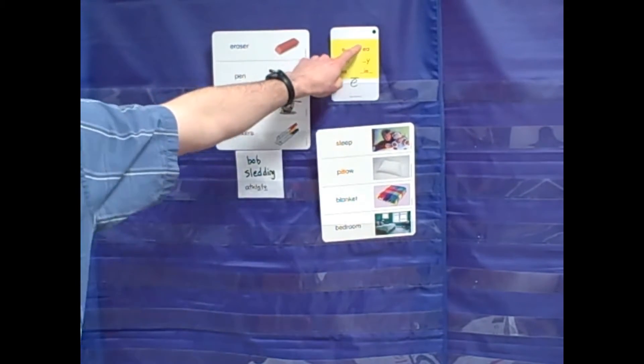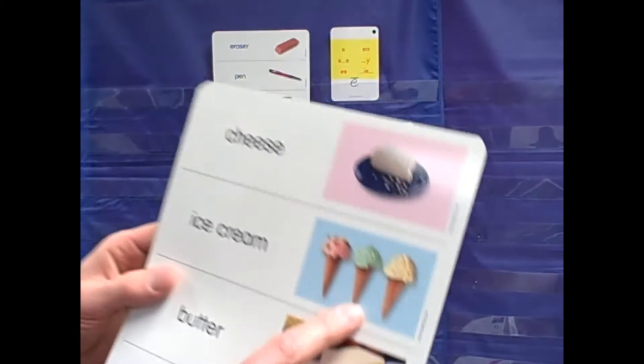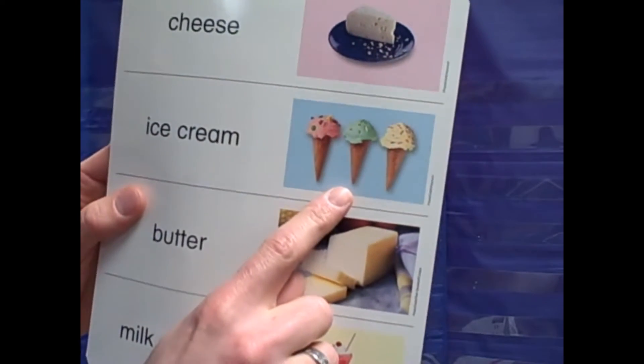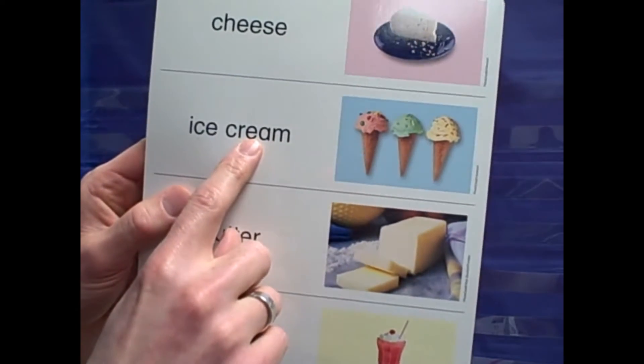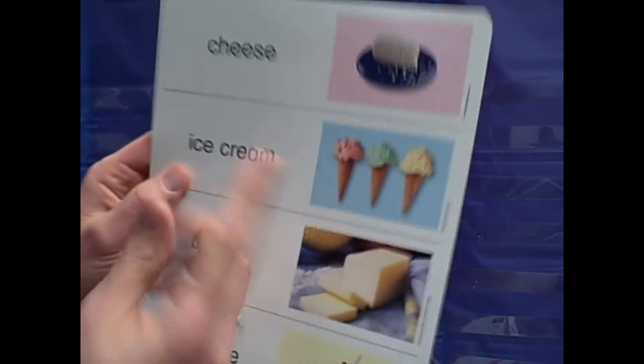The next spelling for E is EA. I like this picture. It shows something that kids know, ice cream. Here's the picture, here's the spelling pattern, EA, and then we read that together.